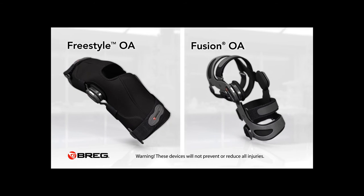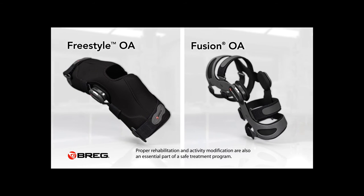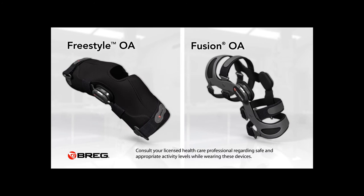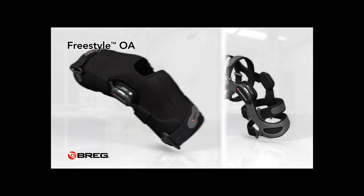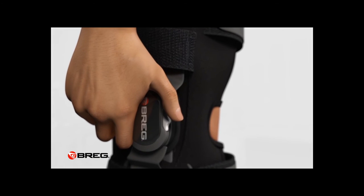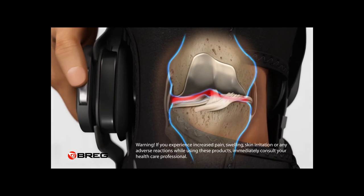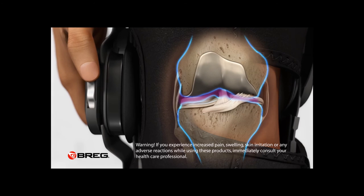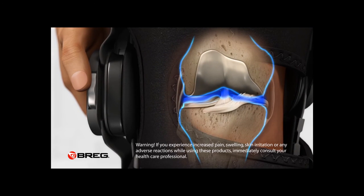Knee braces can help restore knee alignment, particularly during weight-bearing activities like walking. Knee braces for osteoarthritis are known as offloading braces, like Bragg's Fusion OA and Freestyle OA Knee Brace. Bragg OA Braces gently apply pressure to the unaffected side to align the knee, taking pressure off of the affected side. The higher the number on the thumb wheel, the greater the amount of force on the knee.